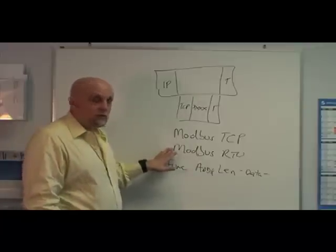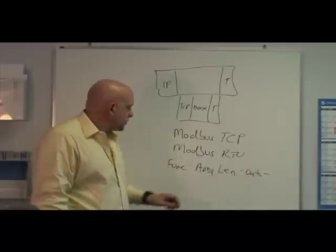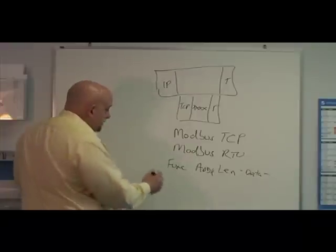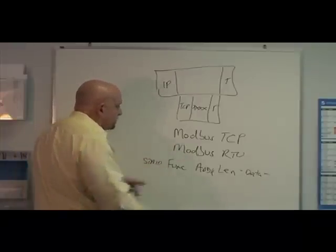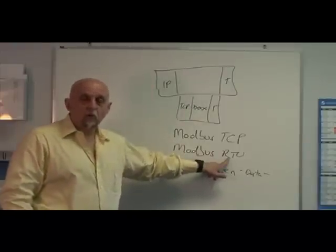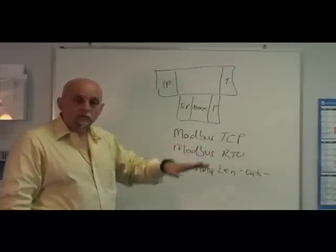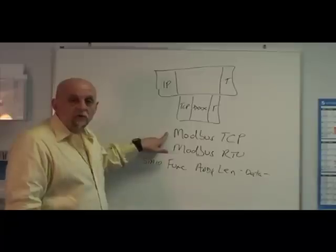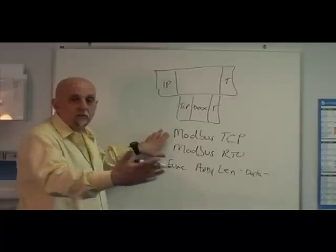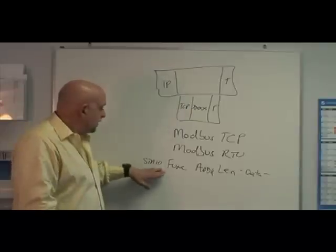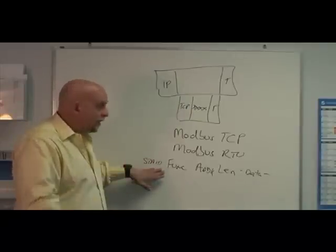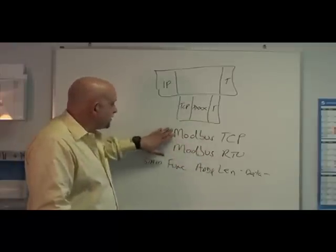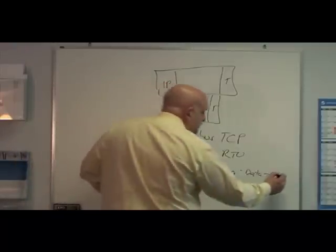Now, Modbus RTU is the same kind of message structure. It's actually got an address on the front, a station ID on the front, because Modbus RTU is on RS-485, so that's a multi-drop network, so you need a station ID to indicate which particular device. On Modbus TCP, we don't use that because we've got an IP address. We've made a connection with a specific IP address. On 485, you have to identify the station it's going to. So that's really the only difference between it. On Modbus TCP, on Modbus RTU, we also have a CRC at the end.